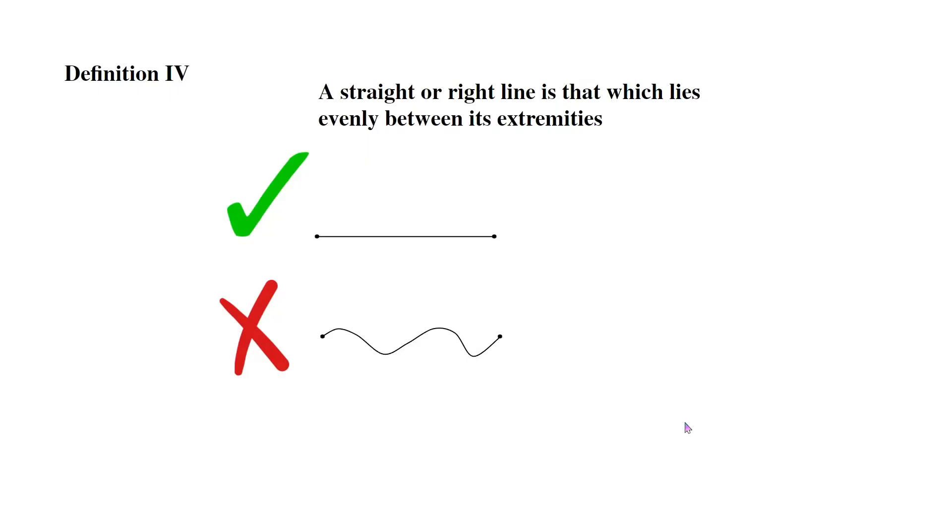Definition 4: A straight or right line is that which lies evenly between its extremities. Now over here, we have the limits. This line is a straight line because it lies evenly between its limits, its boundaries. Now over here, this is an example of something that is not a straight line. The line is wobbly and it doesn't lie evenly between its extremities.